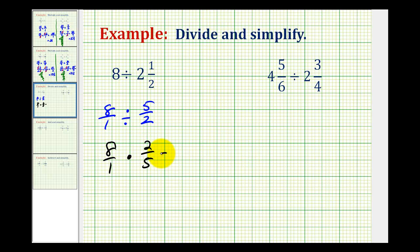So now we'll multiply. Multiply the numerators, we'll have 8 times 2, that's 16. Multiply the denominators, 1 times 5 is equal to 5.